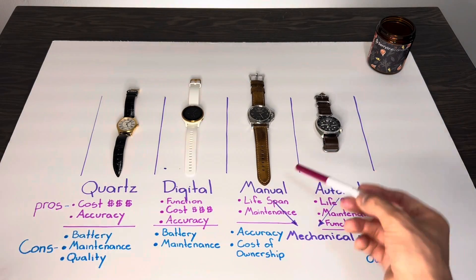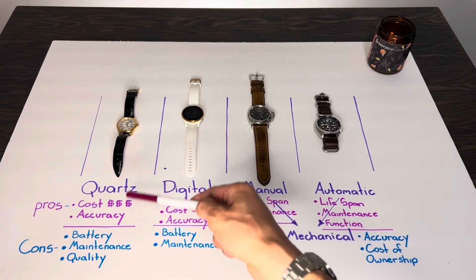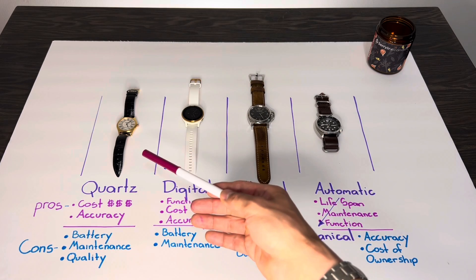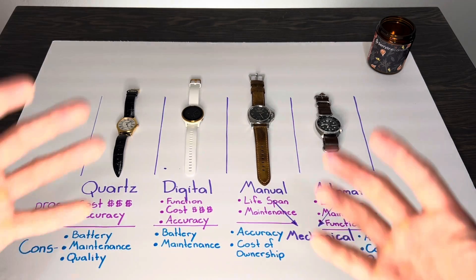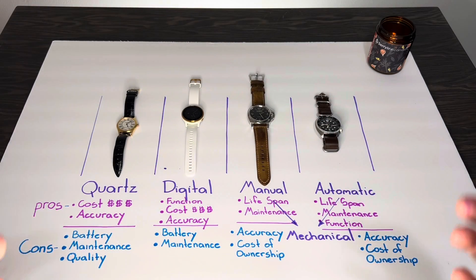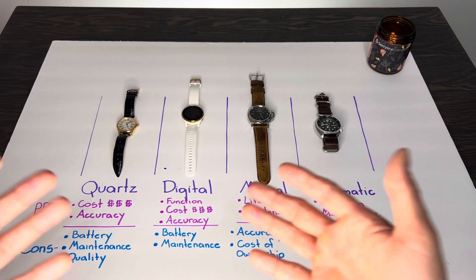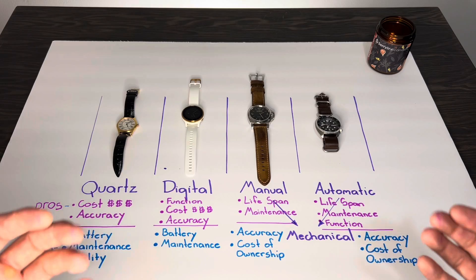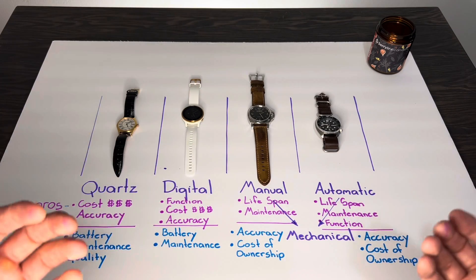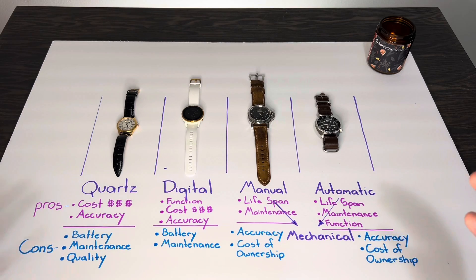Manual watches provide an excellent lifespan, and this is where they truly shine — they're also much appreciated by watch collectors. If your quartz watch breaks down, most people will toss it or simply replace the entire movement. But manual watches have a longer lifespan because they use traditional gears that are designed to be serviced and reassembled. Automatic watches offer this same benefit — longer lifespan — plus the extra functionality of winding themselves.